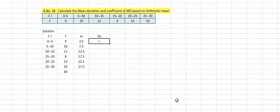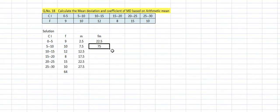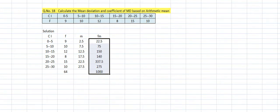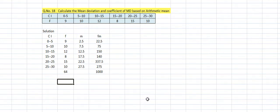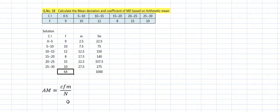For example, 9 into 2.5 equals 22.5. You find all FM values because FM is required to calculate the arithmetic mean. The total of FM is 1000. The formula for arithmetic mean in continuous series is: AM = summation of FM divided by N = 1000 divided by 64 = 15.625.